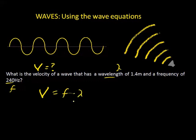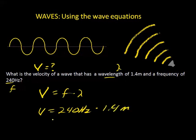Let's go ahead and plug some numbers in. The velocity is equal to the frequency, which is 240 hertz, times the wavelength, which is 1.4 meters. When we multiply this out we wind up with 336 meters per second.